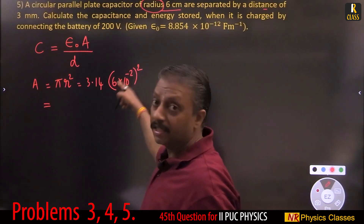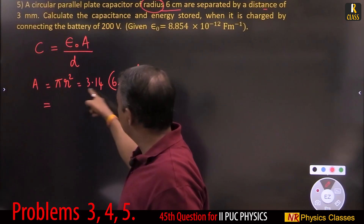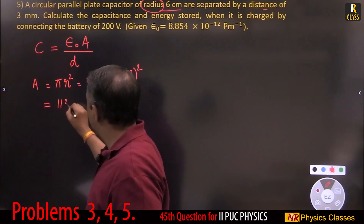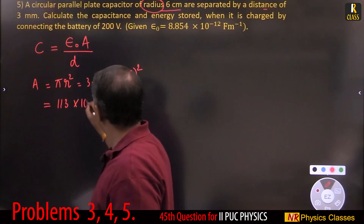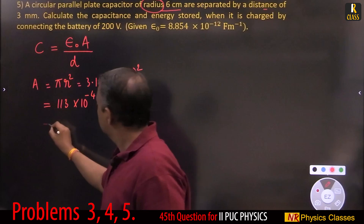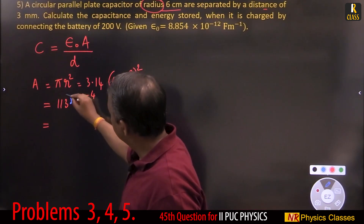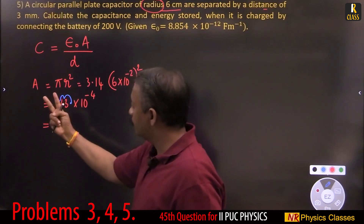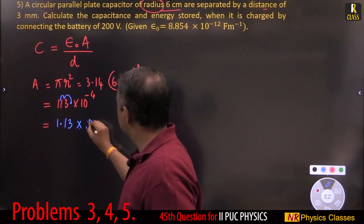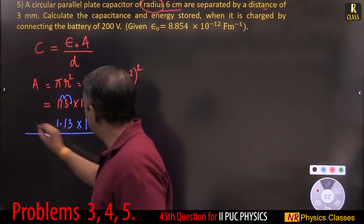Do not forget to square the radius. Radius is 6 centimeters. So A equals pi times 6 squared times 10 to the power minus 4: that is 3.14 times 36 times 10 to the power minus 4. Shifting the decimal gives A equals 1.13 times 10 to the power minus 2 meter squared.